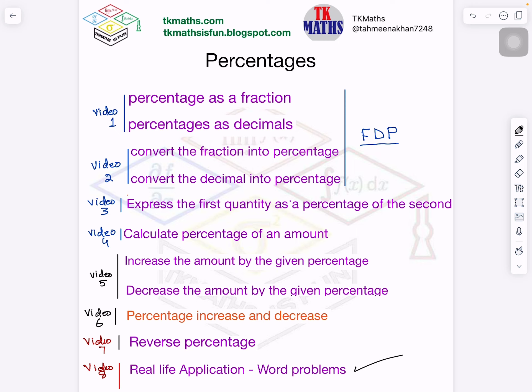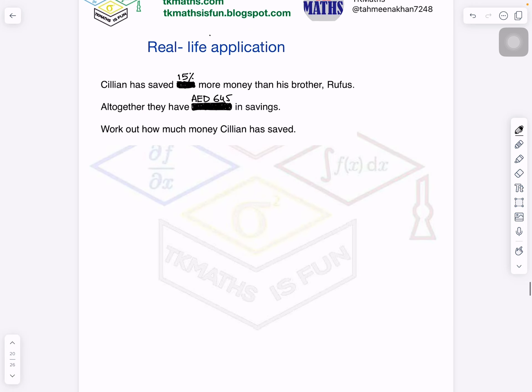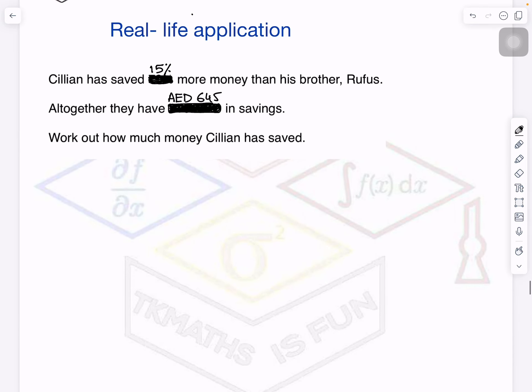The first question is here: Cillian has saved 15% more money than his brother Rufus. So I don't know how much Rufus has or how much Cillian has, but in percentages I know that Cillian has 15% more. Altogether they have 645 dirhams. If we're talking with respect to Rufus, let's take Rufus's amount as 100%, and if Cillian has 15% more, it means Cillian has 115%.